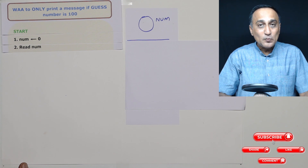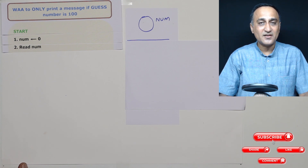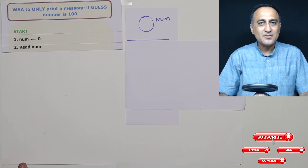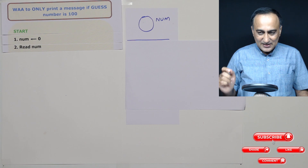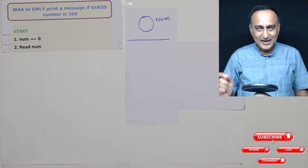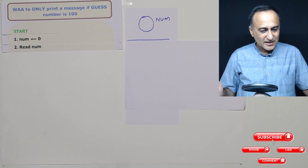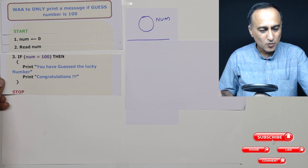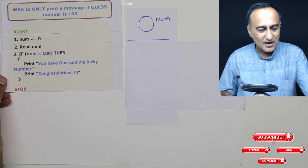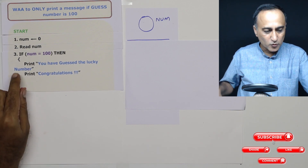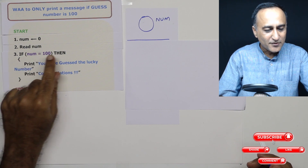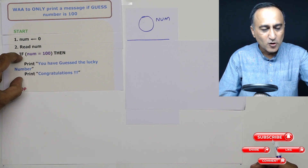Now I need to make a decision. I'm going to use a simple 'if' decision-making statement which says: if the number is equal to 100, then print the message 'The number you have guessed is 100 and you are right.' So in step three, I'm introducing something new — the 'if-then' construct and something called a block.